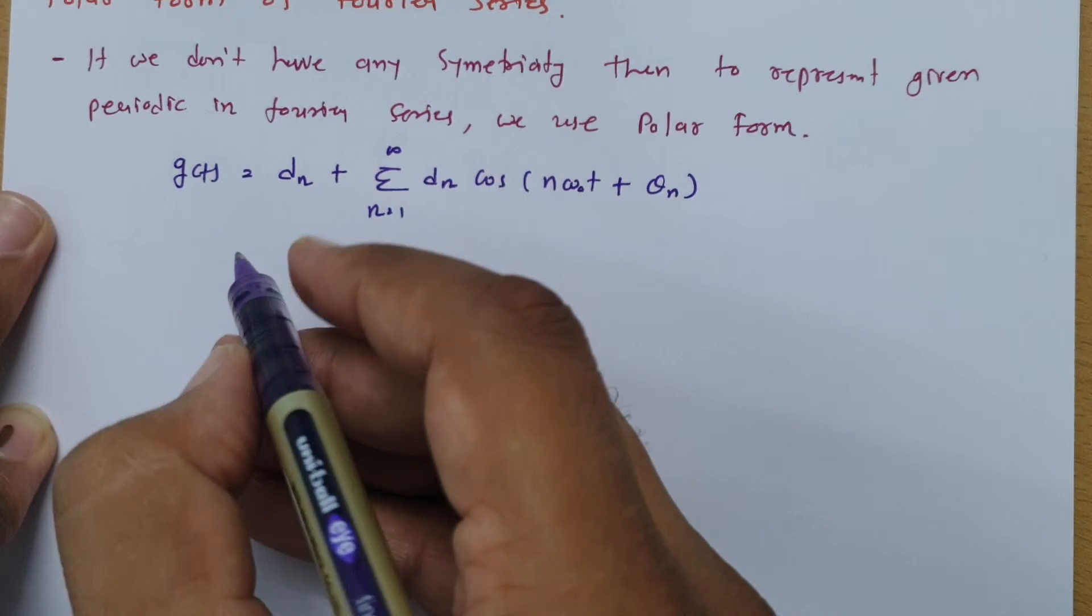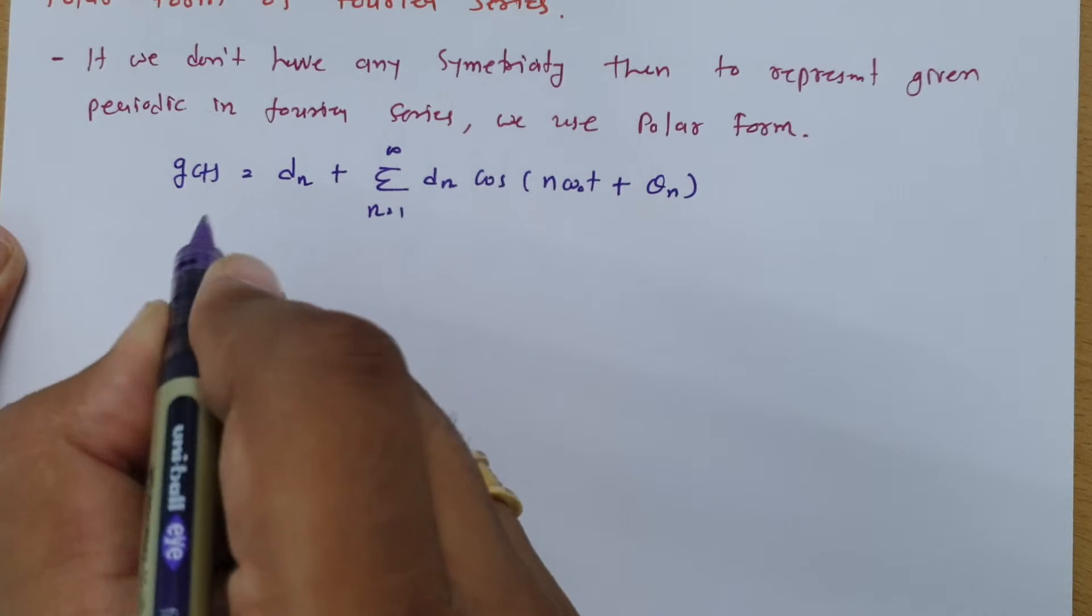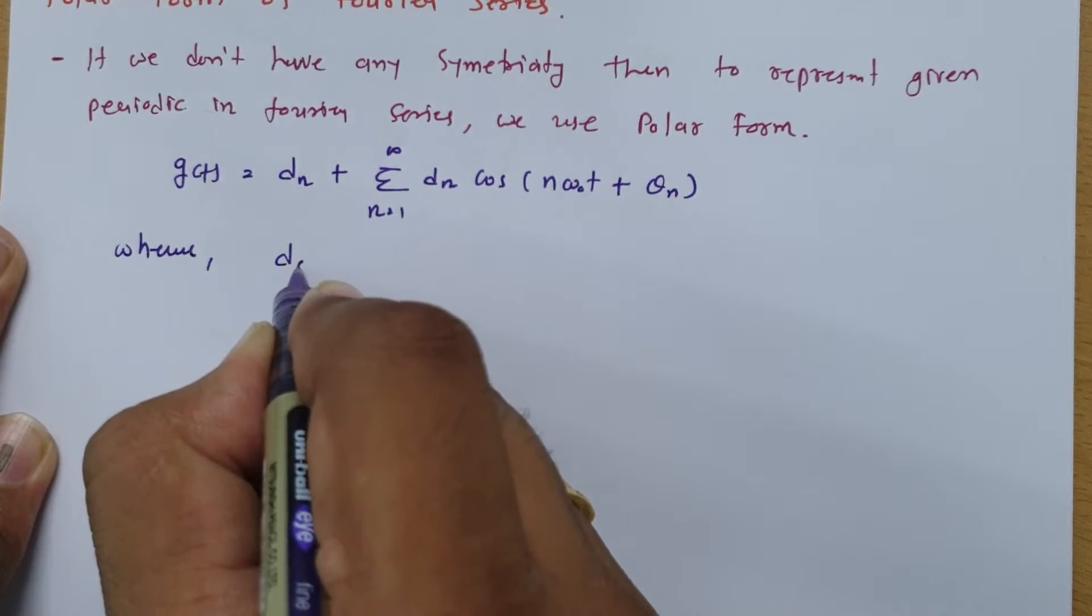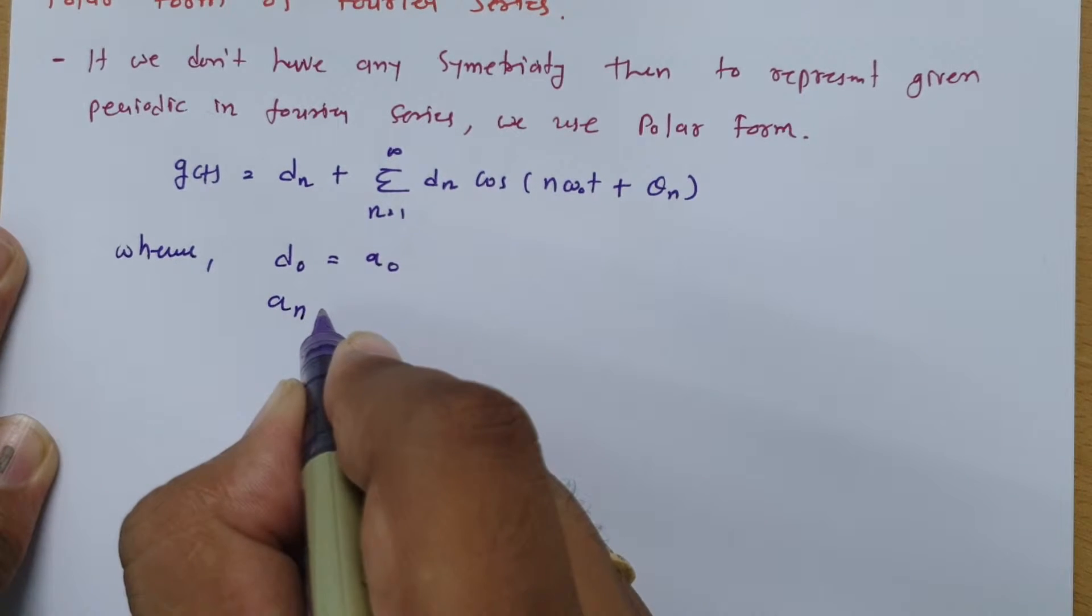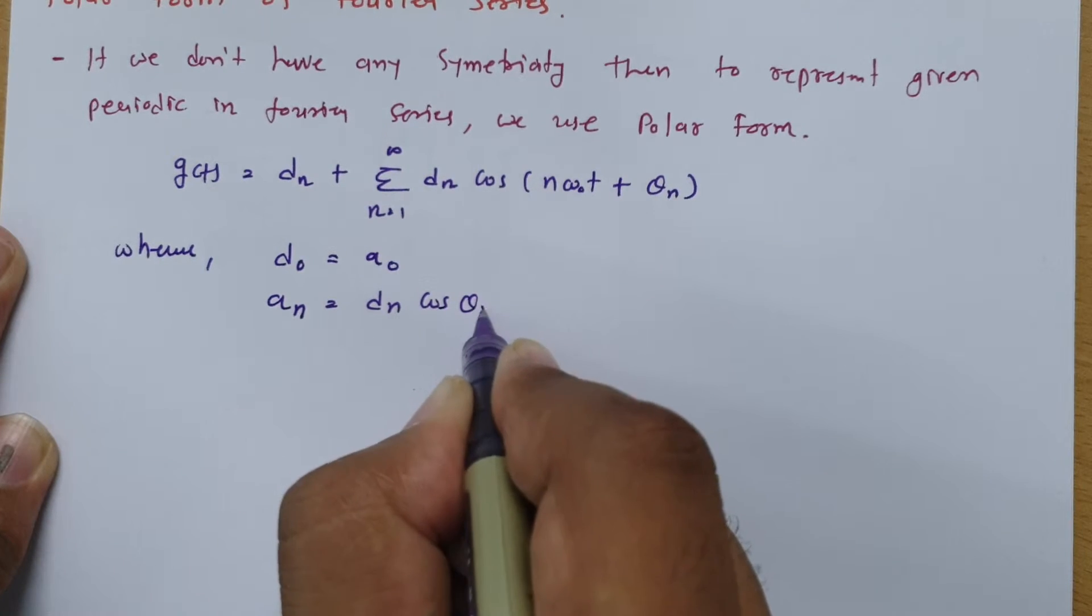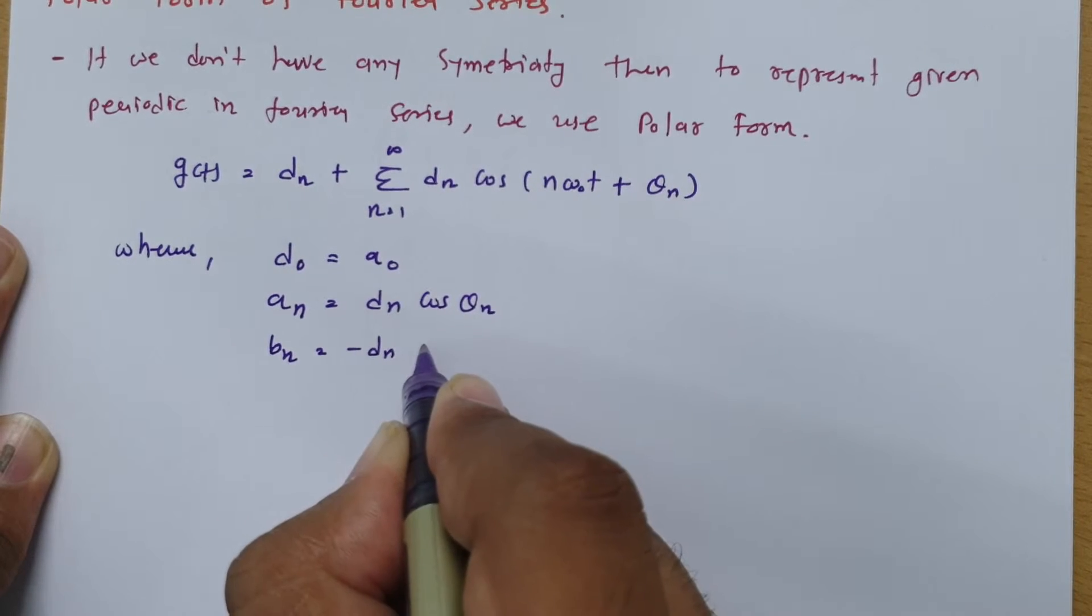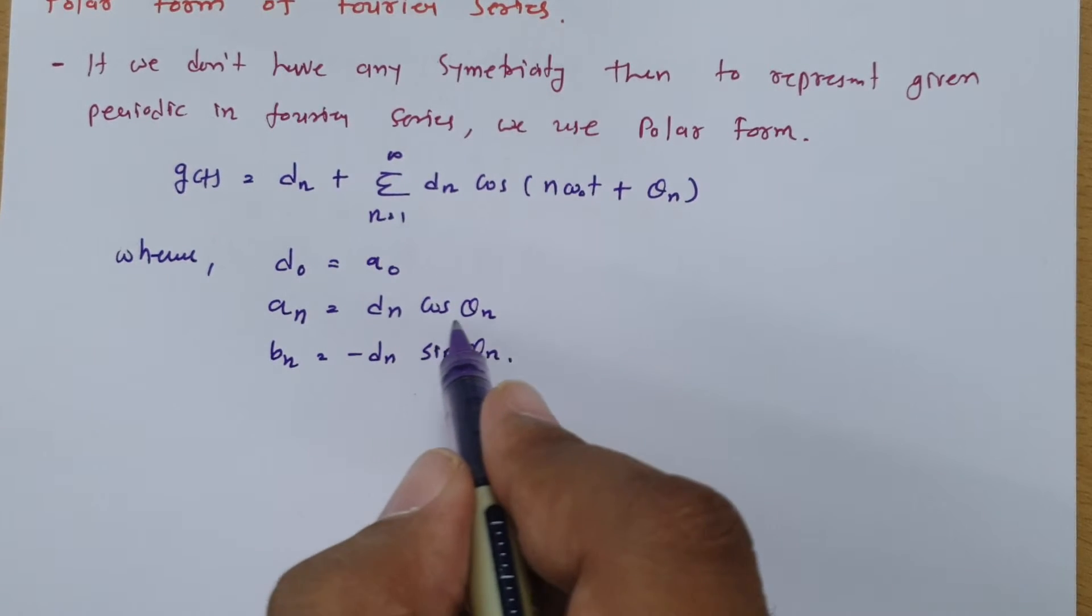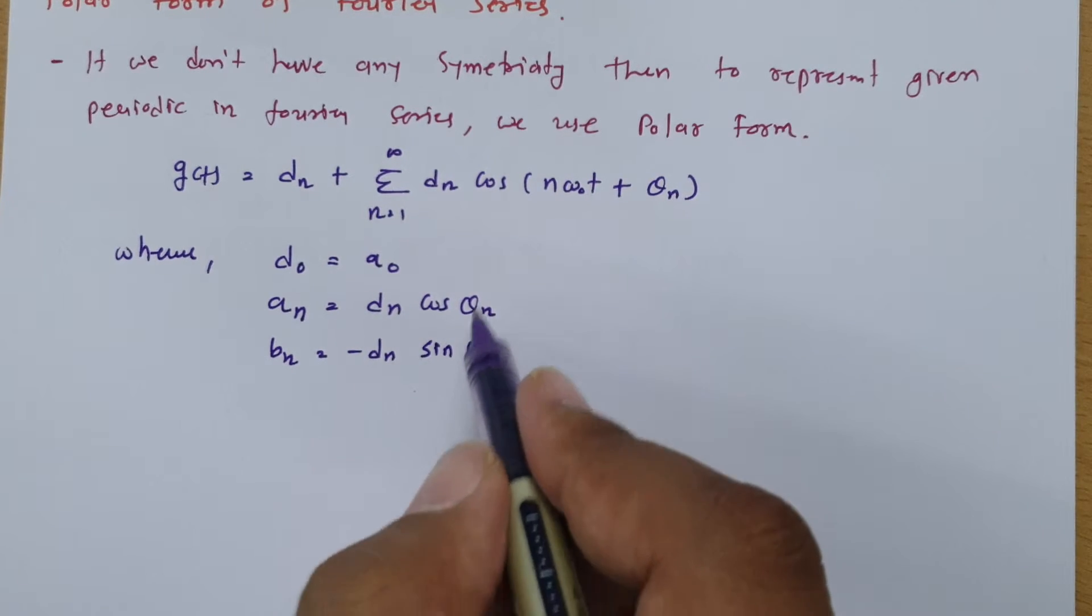Now see here if I say what is the relation in between that trigonometric coefficients then we can have that like see d0 that we can represent as a0. An that one can represent as dn into cos theta n. Bn that one can represent as minus dn into sin theta n. So an is actually dn into cos theta n and bn is minus dn into sin theta n in trigonometric.